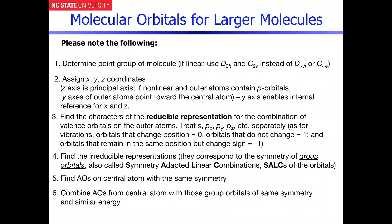This will be the last example from Chapter 5, and then we will proceed to look at transition metal complexes in Chapter 10. The last example we're going to work through is to generate the molecular orbital diagram of boron trifluoride, BF3. I want to remind everybody about the approaches necessary when trying to construct the molecular orbitals for larger molecules, and specifically when the outer atoms contain p orbitals.